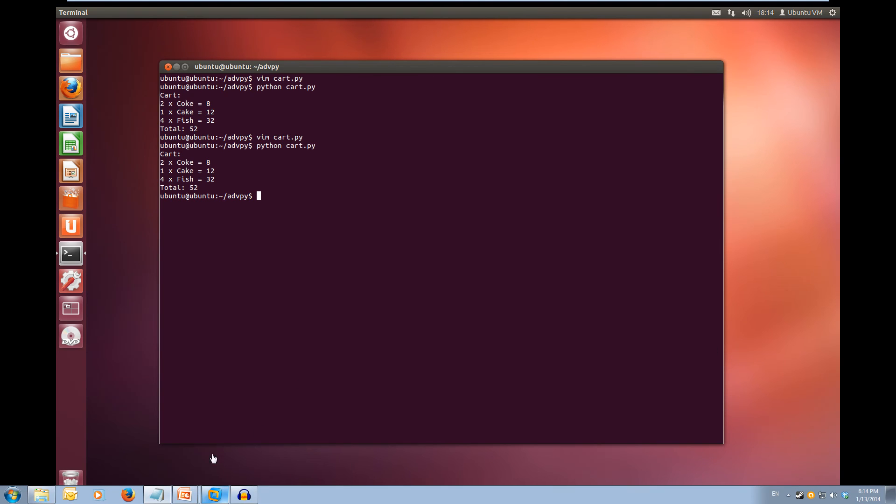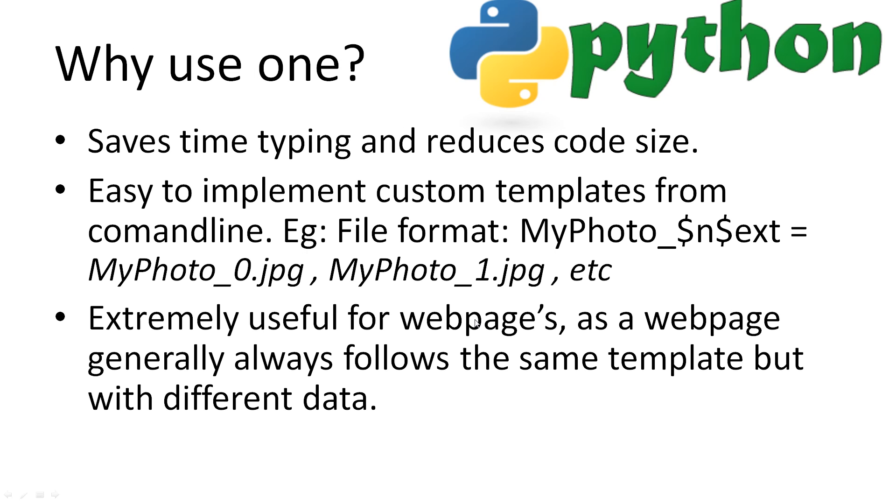So now that we've looked at how to use a template, let's cover why should we use one. The main reason for me is that it saves time and reduces the size of my code files. But it's also good for allowing the user to create templates. For example, a program that renames all of the image files in a directory with the rename style that they construct. As seen here, we would rename all of the photos with the name myphoto underscore the file number plus the images format. Templates are also extremely useful for web pages because usually a web page will look the same but contain different data. This works great with the CGI programming in Python. But more on that in a later tutorial.